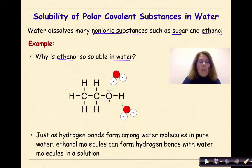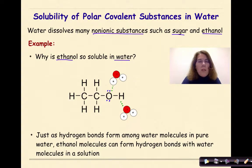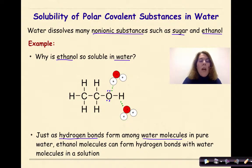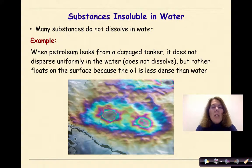Importantly, no covalent bonds are broken as ethanol dissolves in water — it remains as a whole molecule and does not break down into individual hydrogen, oxygen, or carbon atoms. When pure ethanol, which has its own intermolecular forces, is mixed with water, the two mix together because they have similar polarities and can form hydrogen bonds with each other — just as hydrogen bonds form among water molecules in pure water, ethanol molecules can form hydrogen bonds with water molecules in solution.